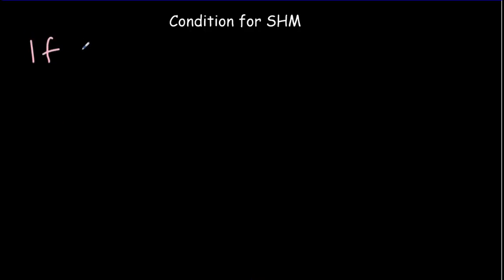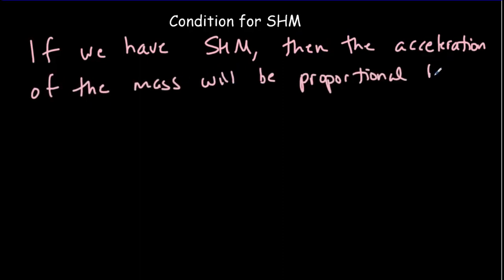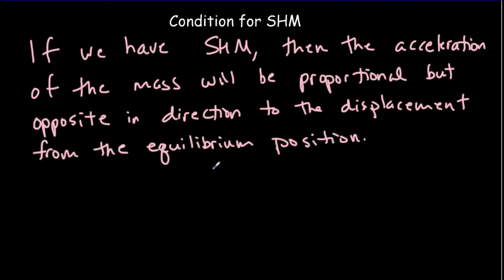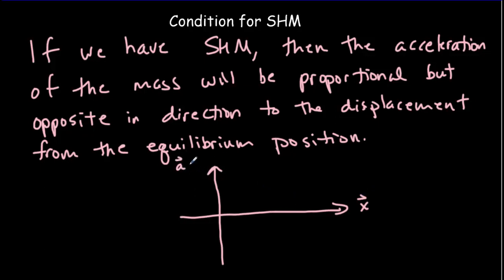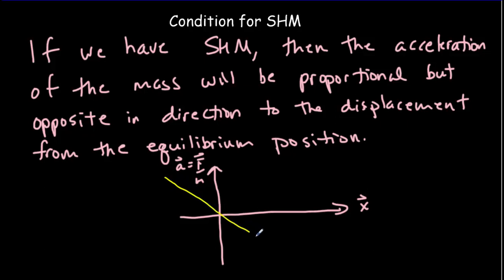This proportional relationship between acceleration and displacement — or between force and displacement — is the defining condition for simple harmonic motion. If we have SHM, then the acceleration of the mass will be proportional but opposite in direction to the displacement from the equilibrium position. A graph of acceleration versus displacement will be a straight line through the origin with a negative slope.